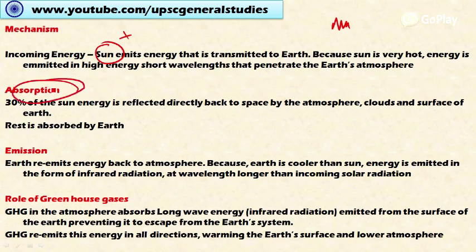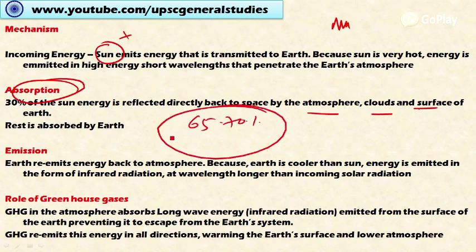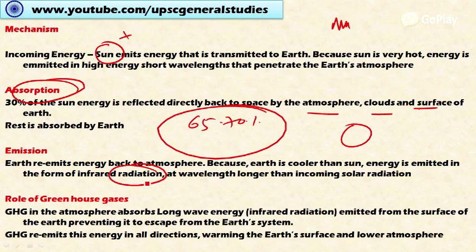About 30% of the Sun's energy is reflected directly back to space by the atmosphere, clouds, and the surface of the Earth. The remaining 65 to 70% is absorbed by the Earth. After absorption, the Earth re-emits energy back to the atmosphere. However, since the Earth's surface is cooler than the Sun, it carries less energy, and the emitted energy is in the form of long-wavelength infrared radiation.